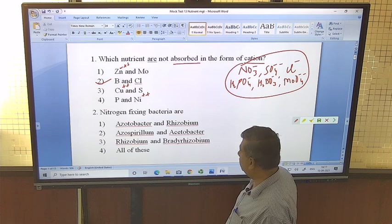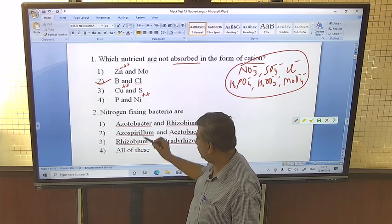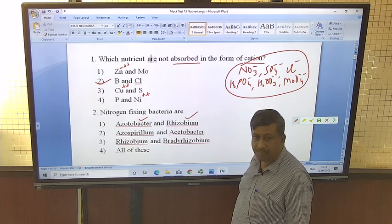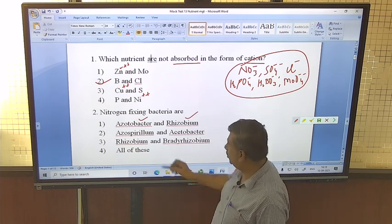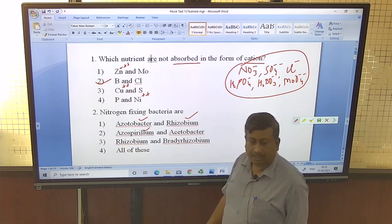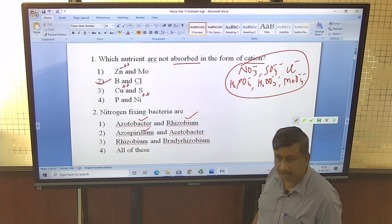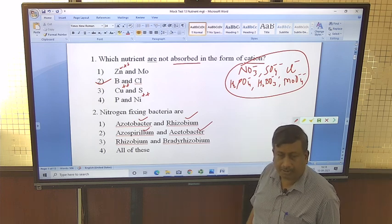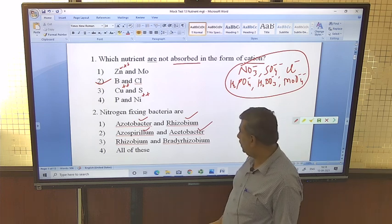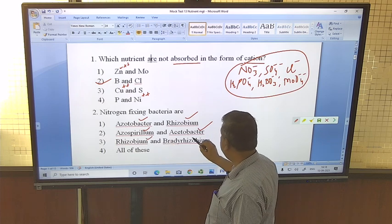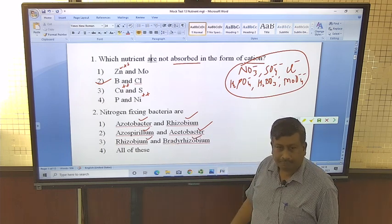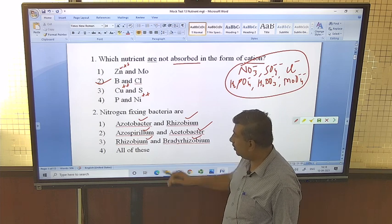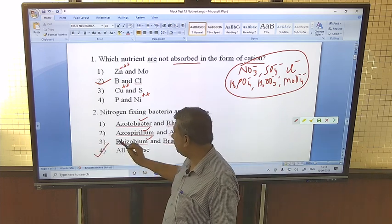Then, nitrogen-fixing bacteria are Azotobacter, it is true, it is free-living bacteria. Rhizobium in legume plants, pulse crops. Azospirillum occurs in rhizosphere, particularly in sorghum. Acetobacter has natural fixation, particularly in sugarcane crop. Then Rhizobium and Bradyrhizobium. Bradyrhizobium is slow-growing bacteria, also fixes nitrogen. So here, answer is all of these.